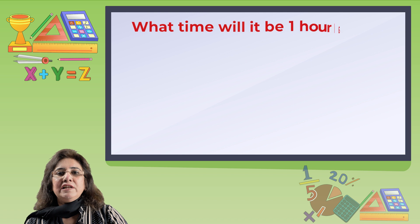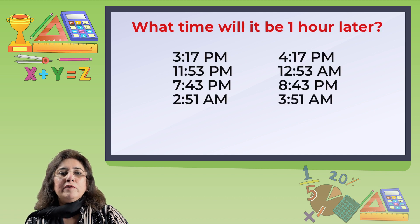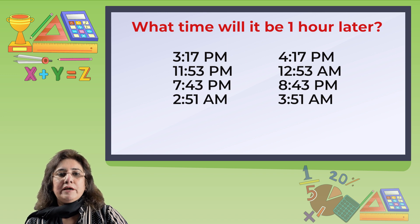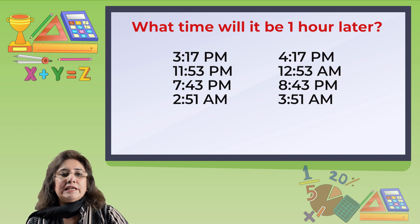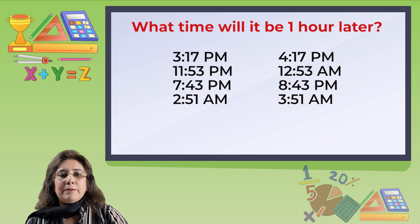What time will it be one hour later than the given time? We are going to add an hour in the hours; the minutes remain the same. 3:17 p.m. becomes 4:17 p.m. 11:53 p.m. becomes 12:53 a.m. 7:43 p.m. becomes 8:43 p.m. 2:51 a.m. becomes 3:51 a.m. The pattern is easy.